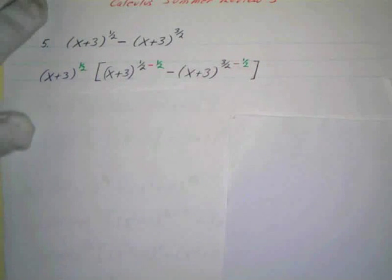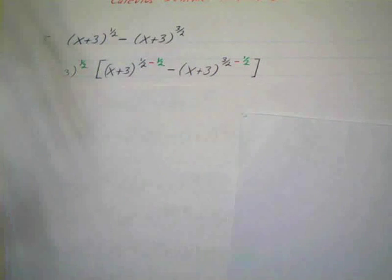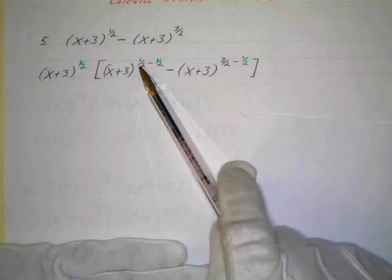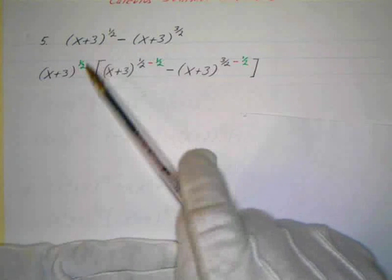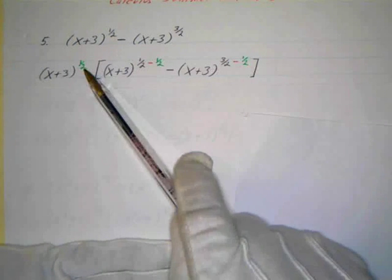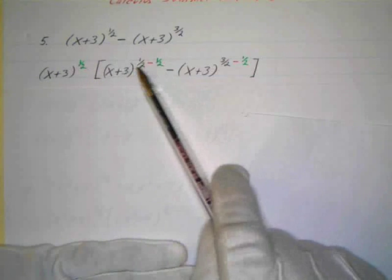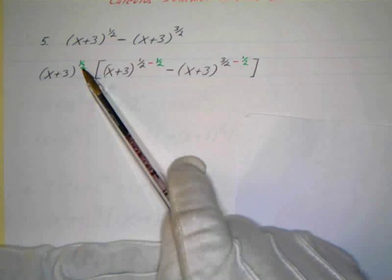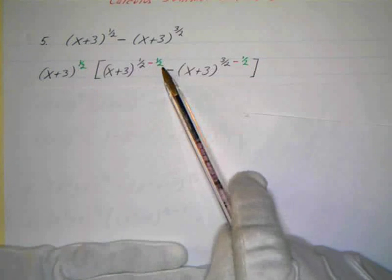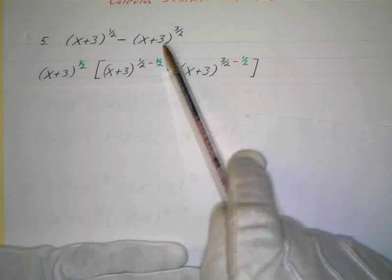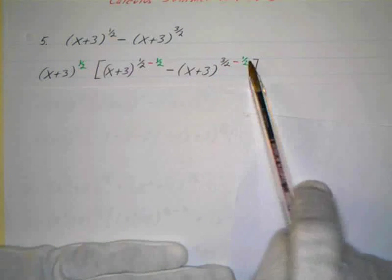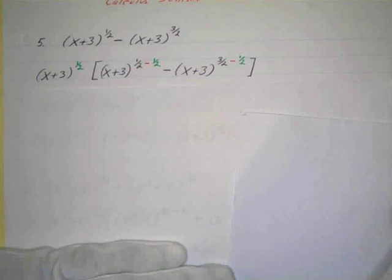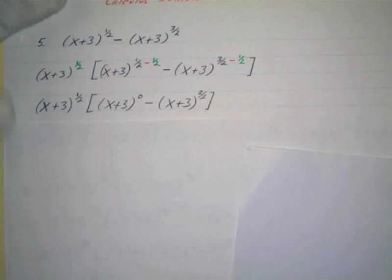I'll let you see what I'm doing here. I've got x plus three to the one-half, and then we're factoring out the one-half because that's the least power. So one-half minus one-half — we divide by subtracting the exponent. Then x plus three to the three-halves minus one-half: one-half minus one-half is zero, and three-halves minus one-half is two-halves.